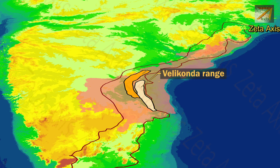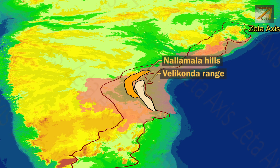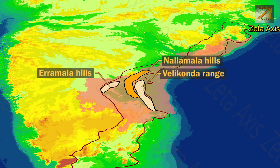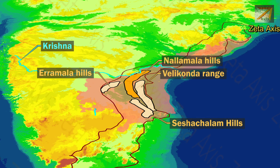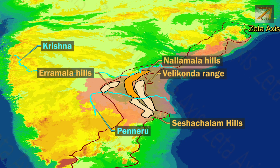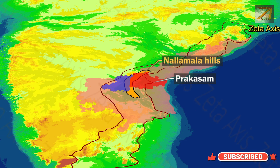The next important mountain range is the Nallamala mountain range, located west of the Velikonda mountain range. The Nallamala mountain ranges also have a north-south orientation. To the west of the Nallamala hills are located the Erramala hills, and to the north the Krishna river rises, while to the south lie the Seshachalam hills. The Peniru river separates the Seshachalam hills and the Nallamala hills. The Nallamala hills mainly stretch across Prakasam, Nandyal, and Kadapa districts of Andhra Pradesh.